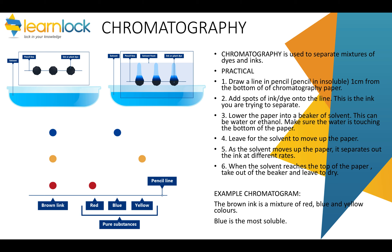Chromatography is a different separation technique used to separate mixtures of dyes and inks. Draw a line in pencil on chromatography paper or filter paper — it must be pencil because pencil is insoluble with the solvent, so it won't run or smudge. Add spots of the ink or dye you're separating onto the pencil line, then gently lower the paper into a beaker of solvent — usually water, but ethanol can be used if the ink doesn't dissolve in water. As the solvent moves up the paper, it separates the inks at different rates. When it nears the top, remove the paper and leave it to dry. For example, brown ink is actually a mixture of red, blue, and yellow ink, and blue is the most soluble because it travels the furthest.